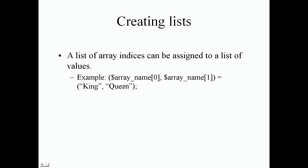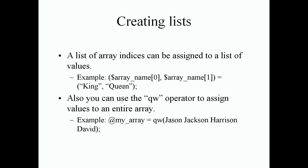That's pretty much it in a nutshell when it comes to creating lists. We can assign specific values to specific indices in an array and bypass creating a full list of values. You can also use the qw operator to assign values to an entire array — qw stands for 'quoted words'.